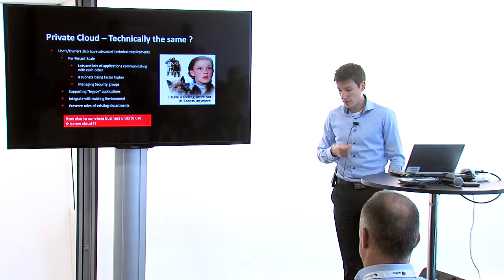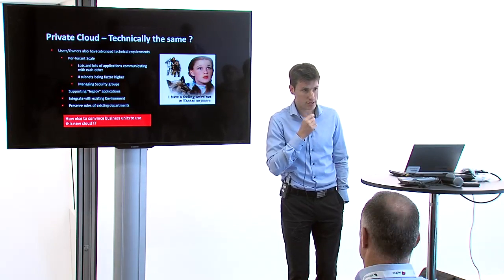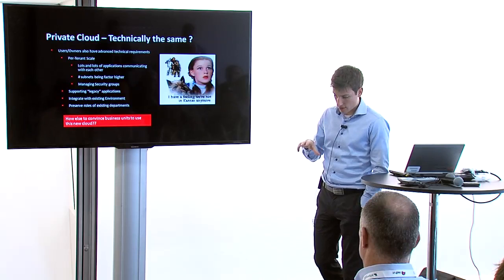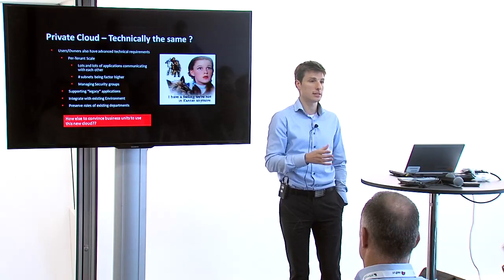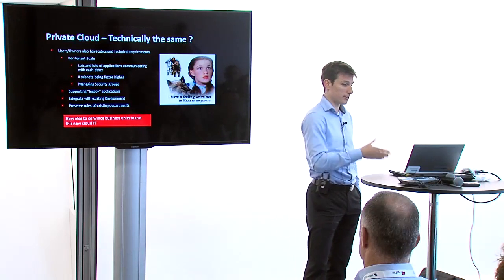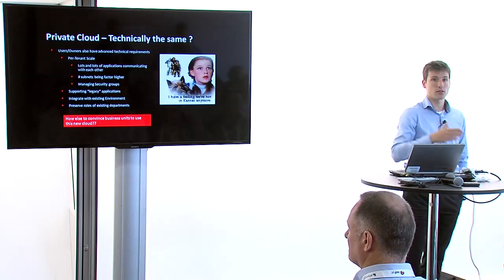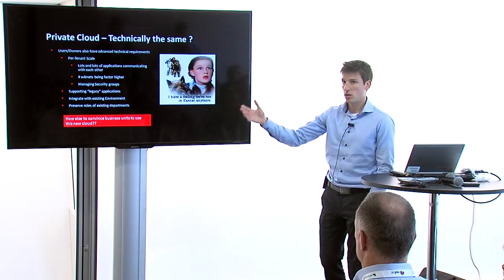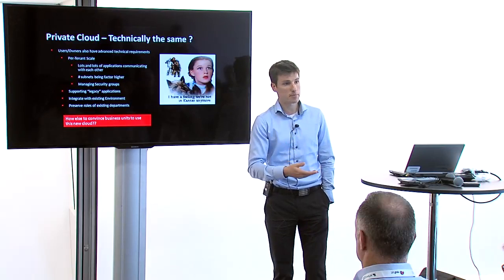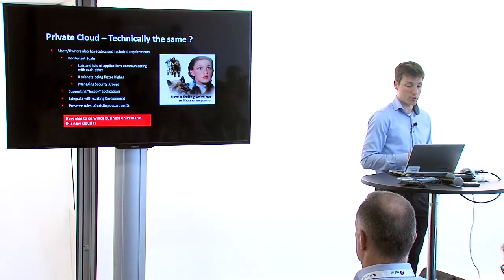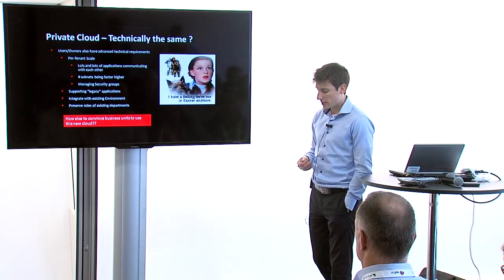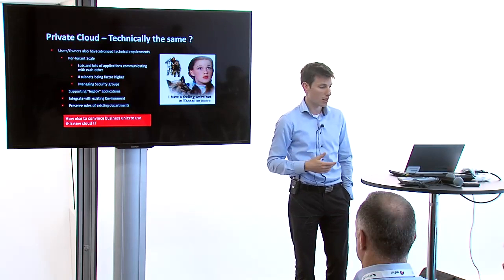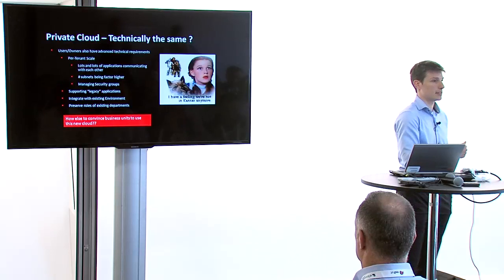And what we're actually seeing is that what enterprises are telling us is that one of the key differences is the type of scale that they expect in a VPC or as part of a tenant. Because one of the major differences there is that applications don't run purely in isolation. They actually communicate a lot with each other. They're not really like having one single interface to the internet. They're actually communicating with a lot of neighboring applications. And so what that means is that the number of subnets or the number of VMs within one tenant environment is going to be a lot higher.